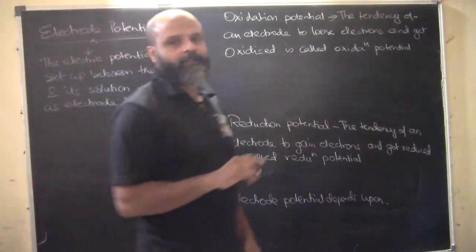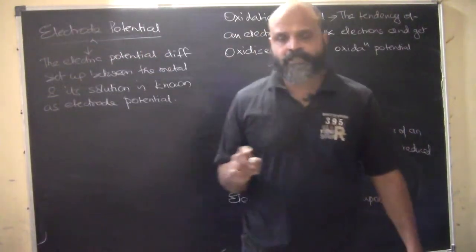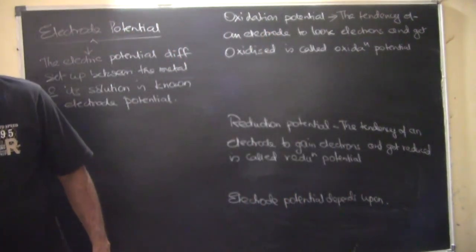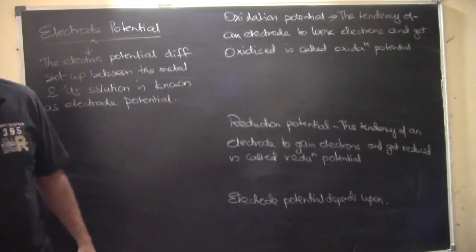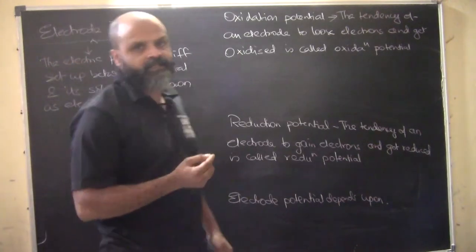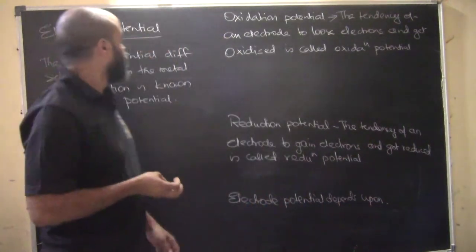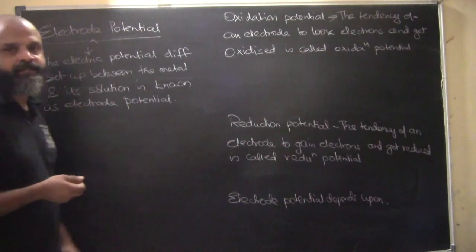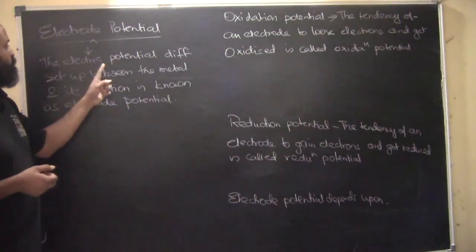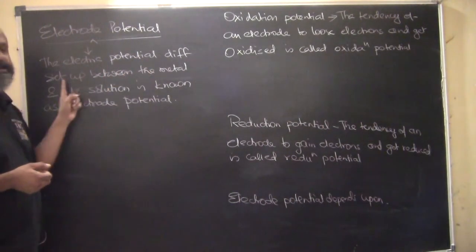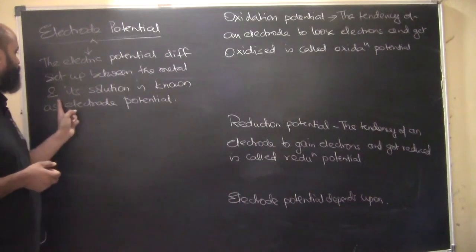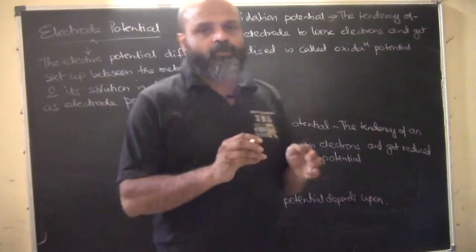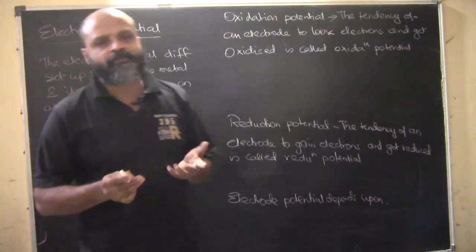We are going to continue with electrode potential. As we have seen, in an electrolyte or in an electrochemical cell, oxidation and reduction definitely take place. So we are going to understand what electrode potential is. Electrode potential is basically the electric potential difference set up between the metal and its solution.